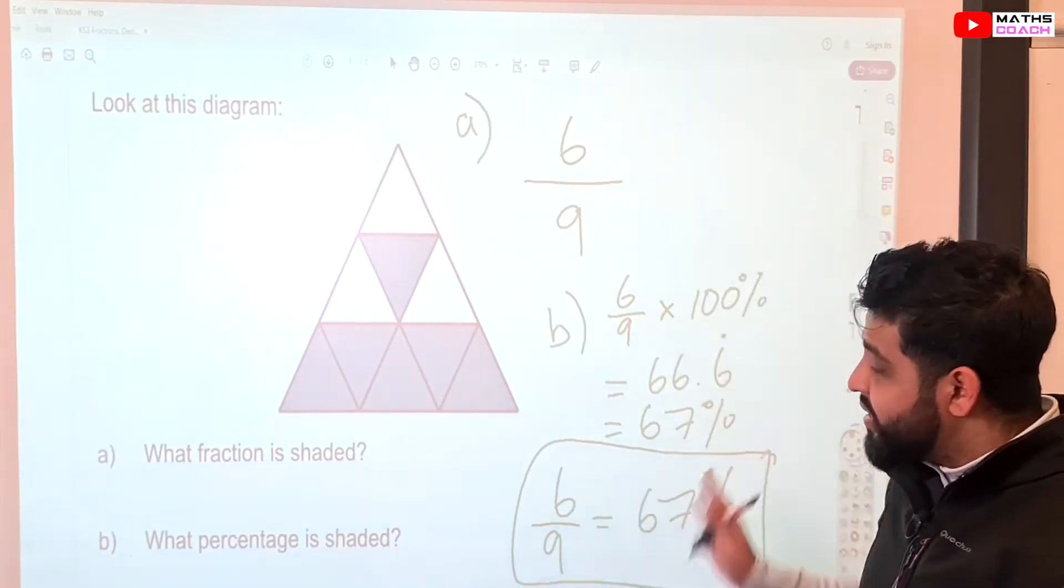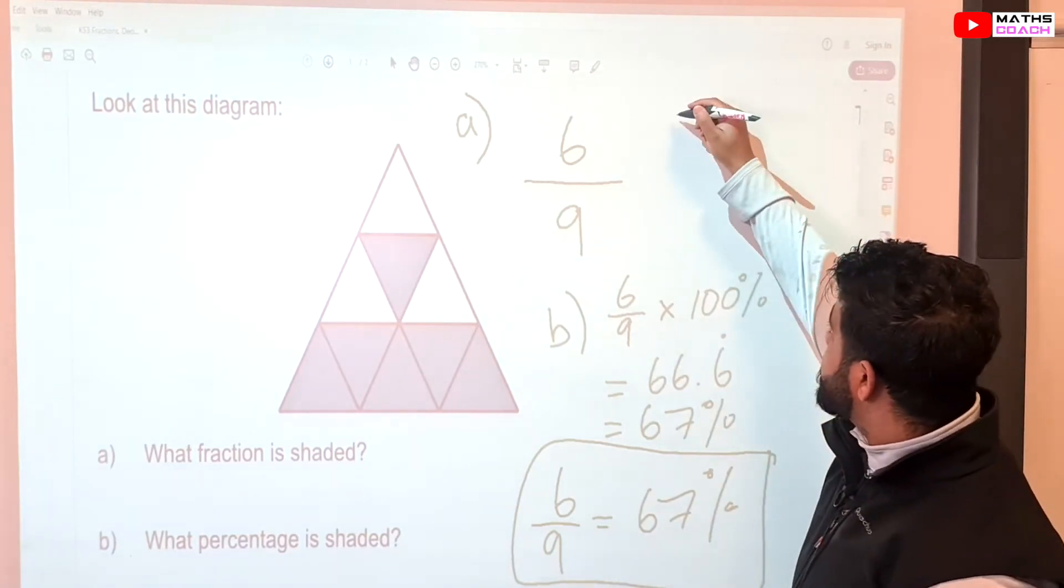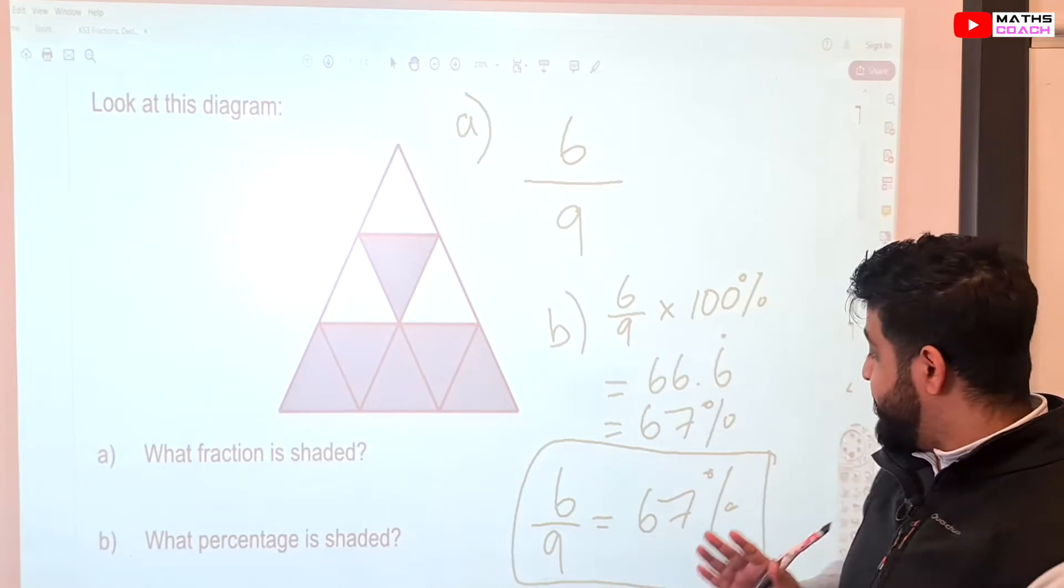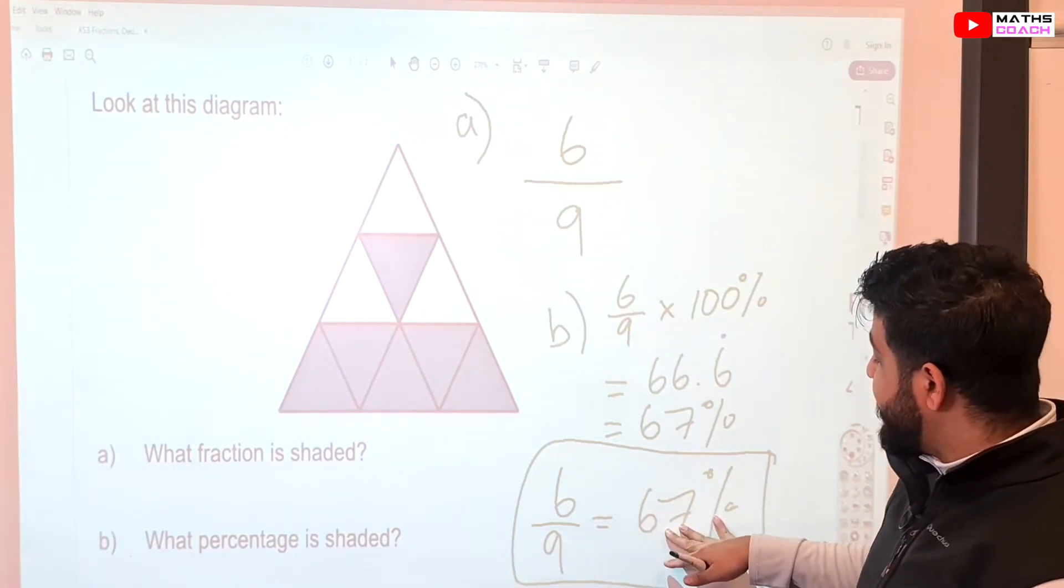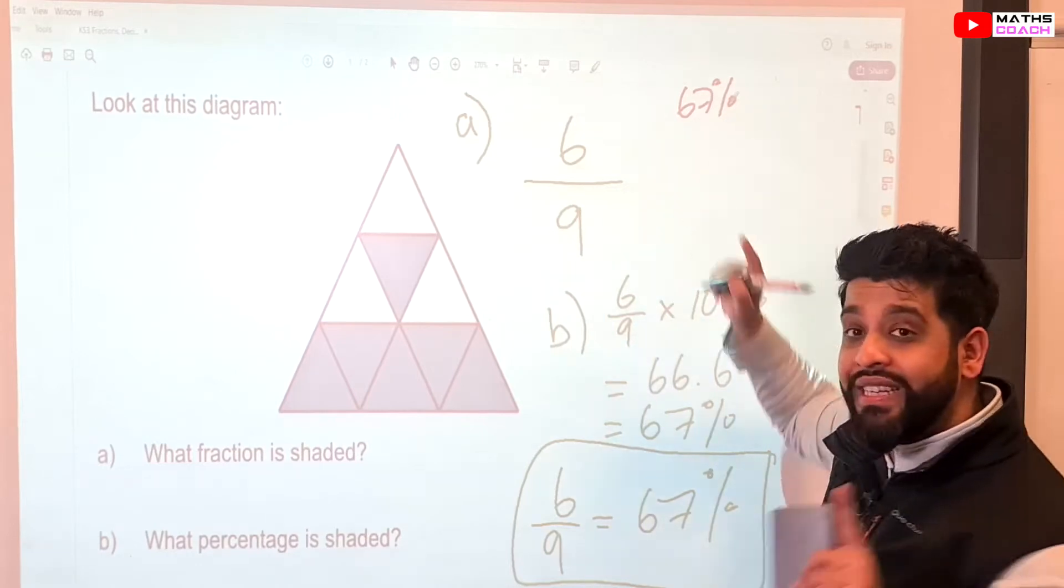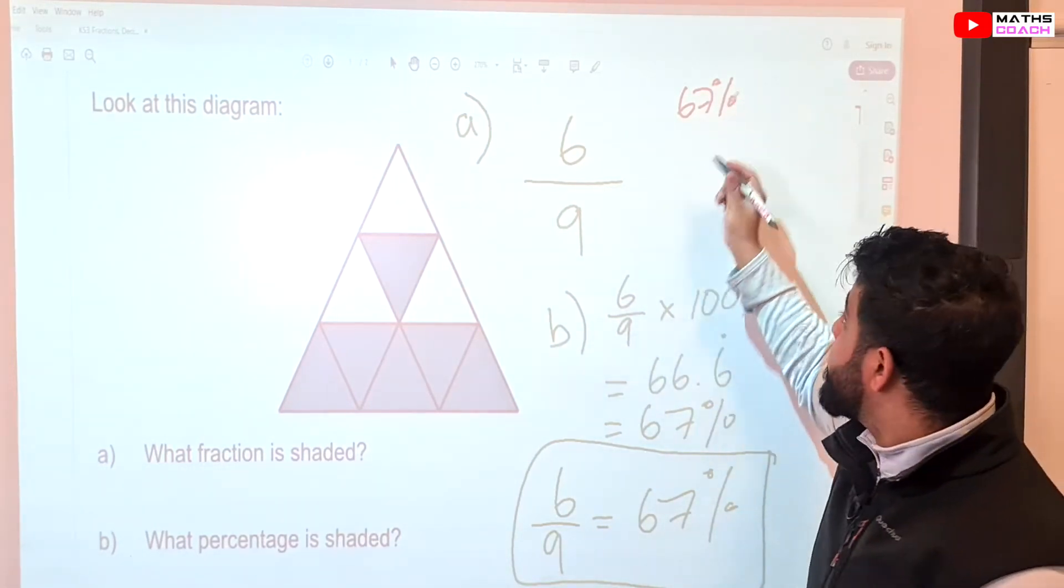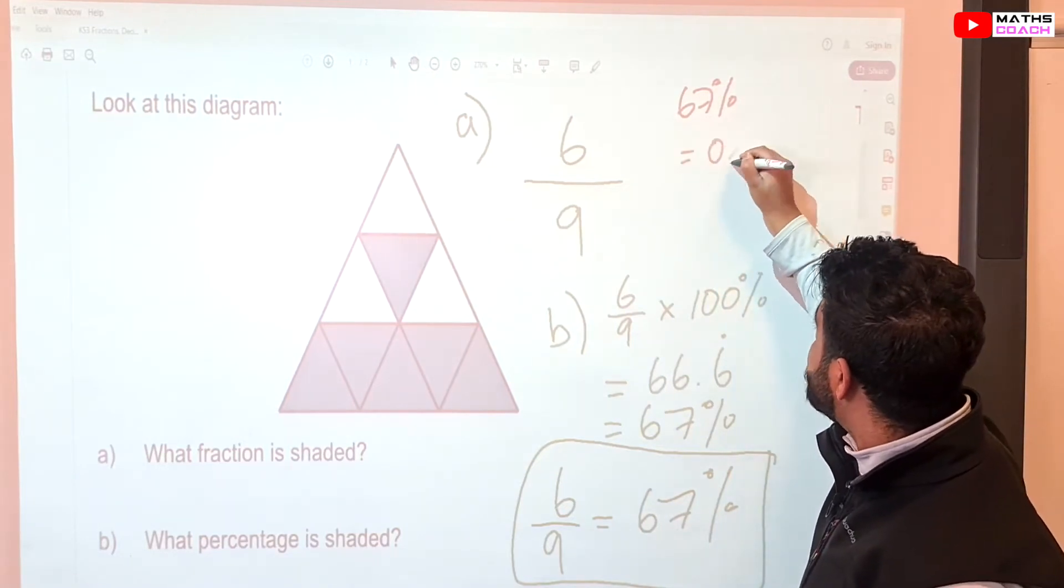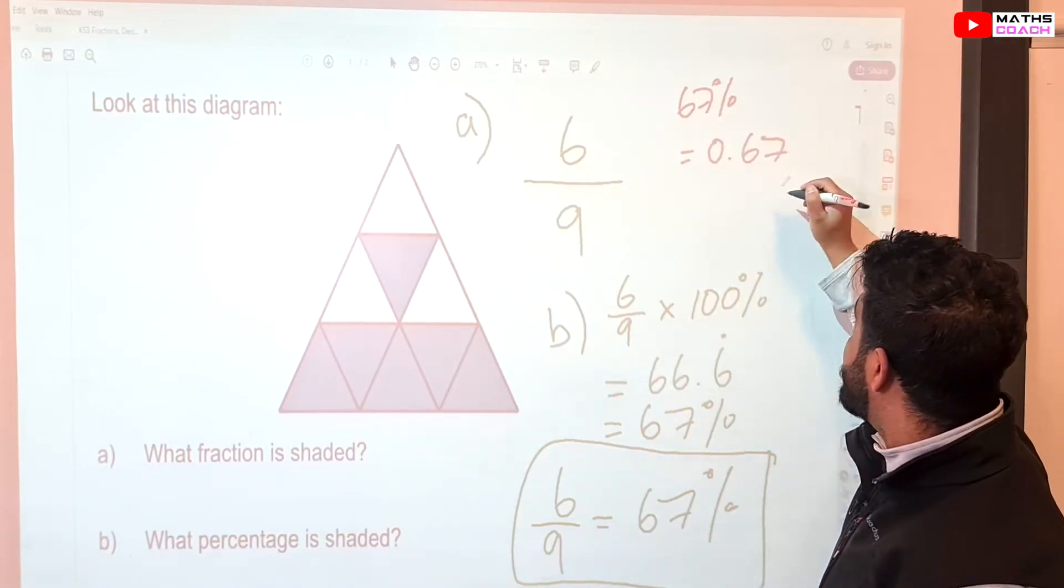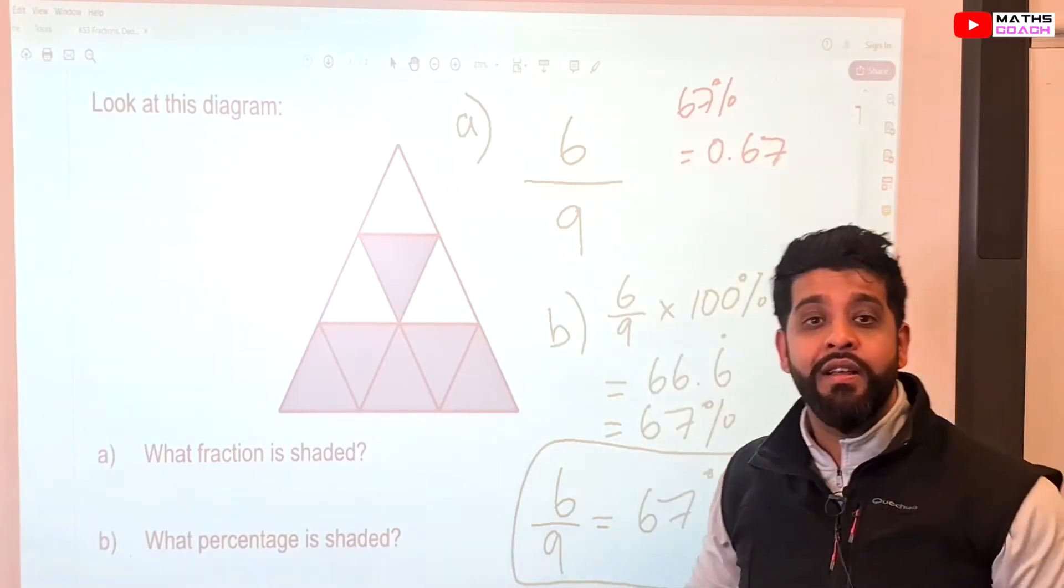Now, this question doesn't ask you to, but I will do this anyway because it's quite straightforward. What about the decimal? Well, the decimal forms can be easily worked out from the percentage. If it's 67%, therefore, the decimal point will divide 67 by 100. So, 67 divided by 100 is 0.67. And 0.67 is the decimal for 6 over 9, the fraction.